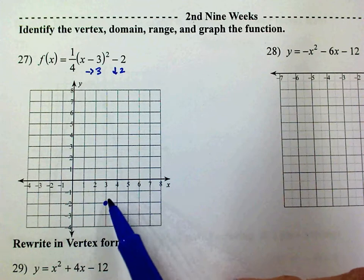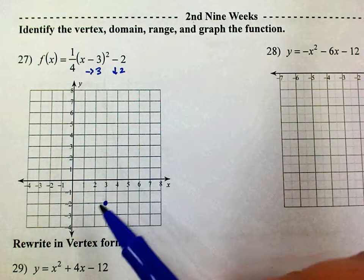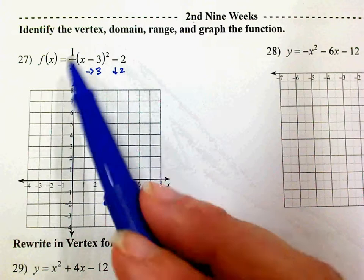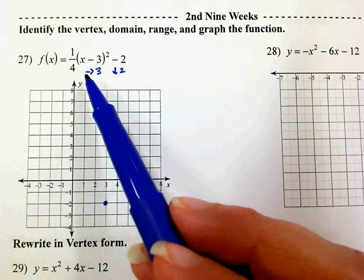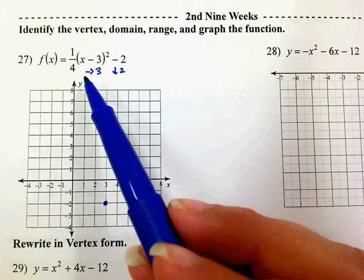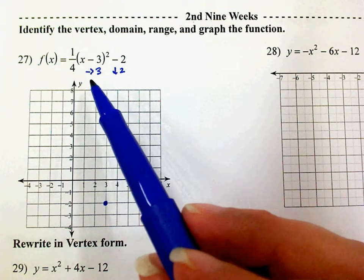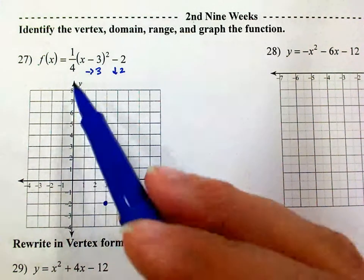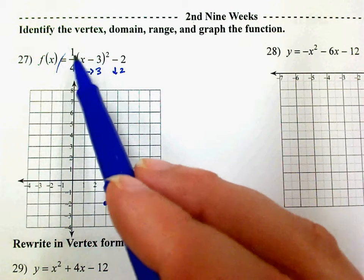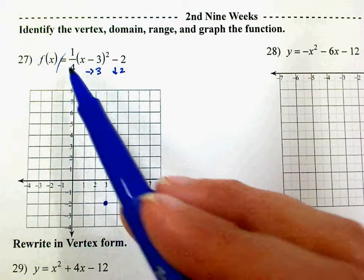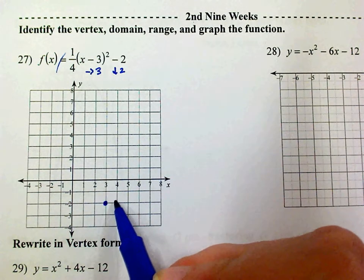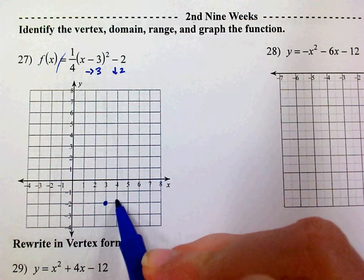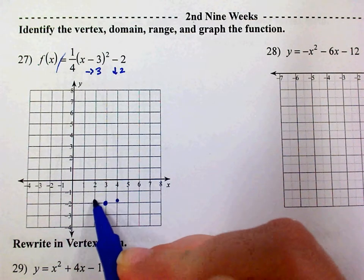To find the next points, you can type this into the calculator in Y= and look at the table values. If you don't have a calculator, remember a is 1/4, which means go to the right one and go up or down that amount. So go to the right one and go up a 1/4, and to the left one and go up a 1/4.